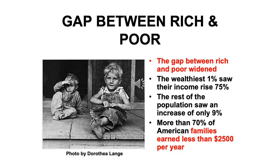The economy is dependent on you and me having the money to buy stuff. If our wages are not increasing, if our purchasing power is not increasing, then the economy stagnates. That's exactly what had been happening in the 1920s. And some say that's what's happening today.